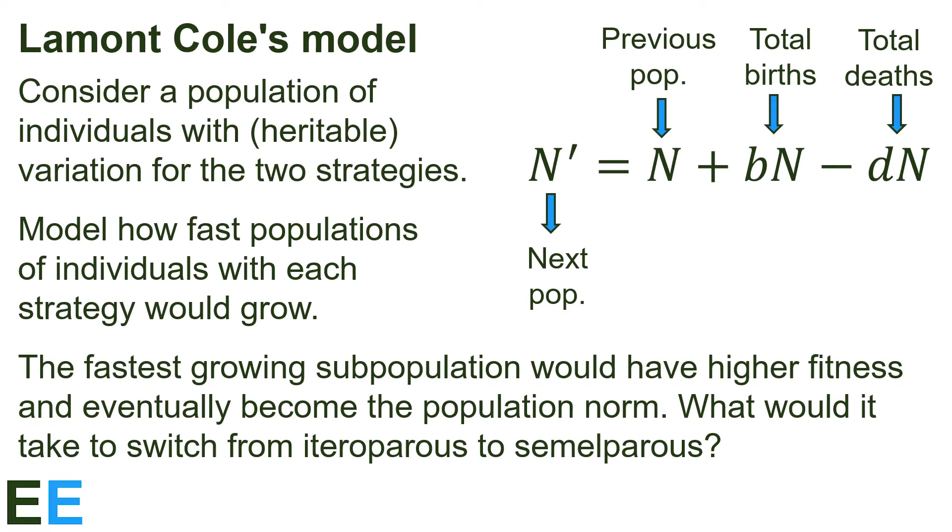For two iteroparous subpopulations, more births and lower deaths both give a higher growth rate. However, if there's a trade-off between these two factors, increased births also increase the death rate for example, the exact number of additional births needed to offset the additional deaths might require some calculation.